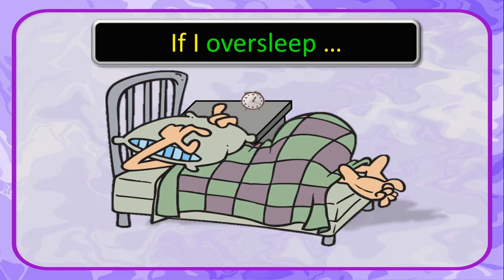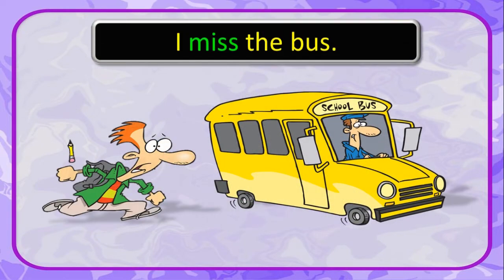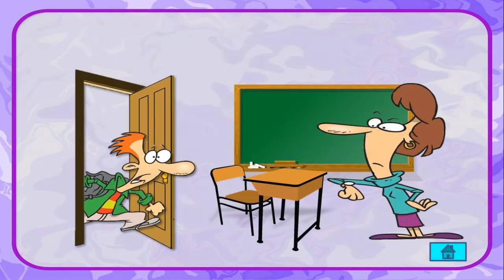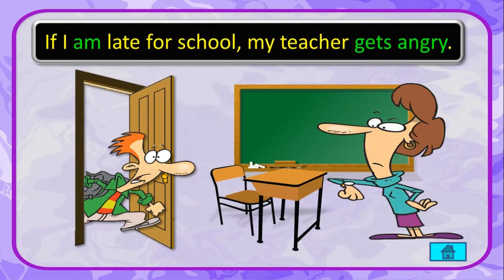Another example of the zero conditional chain: if I oversleep, I miss the bus. If I miss the bus, I am late for school. If I am late for school, my teacher gets angry.